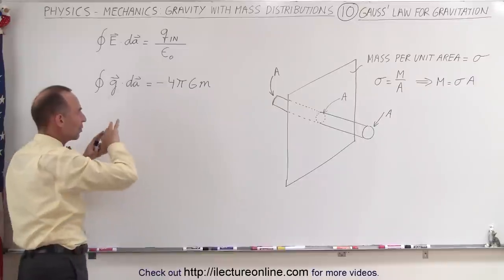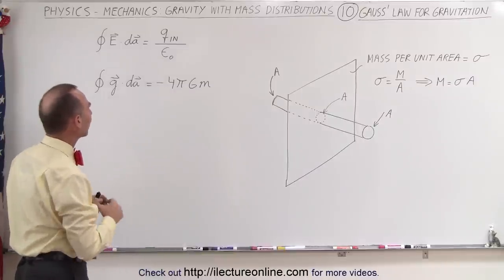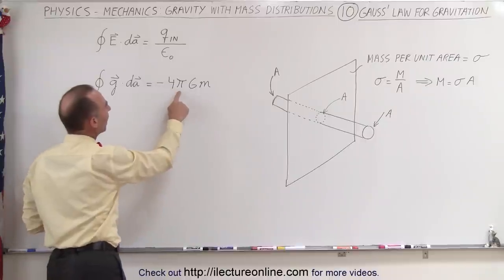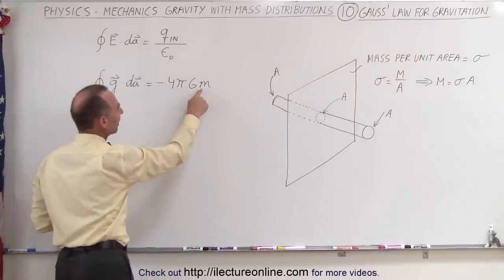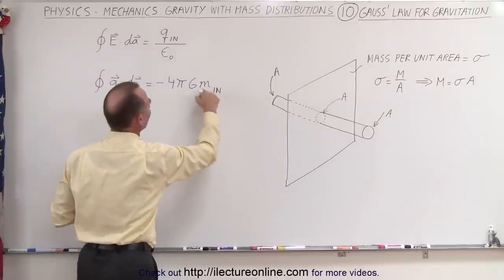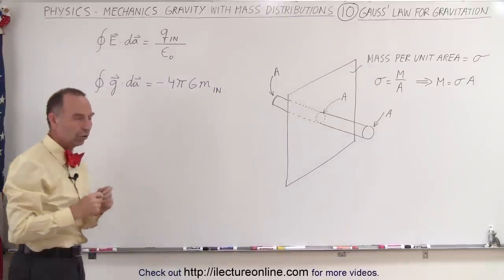This is the dot product with dA, which is the surface area of that Gaussian region. And that is equal to minus 4π times the gravitational constant times the mass inside that Gaussian surface.